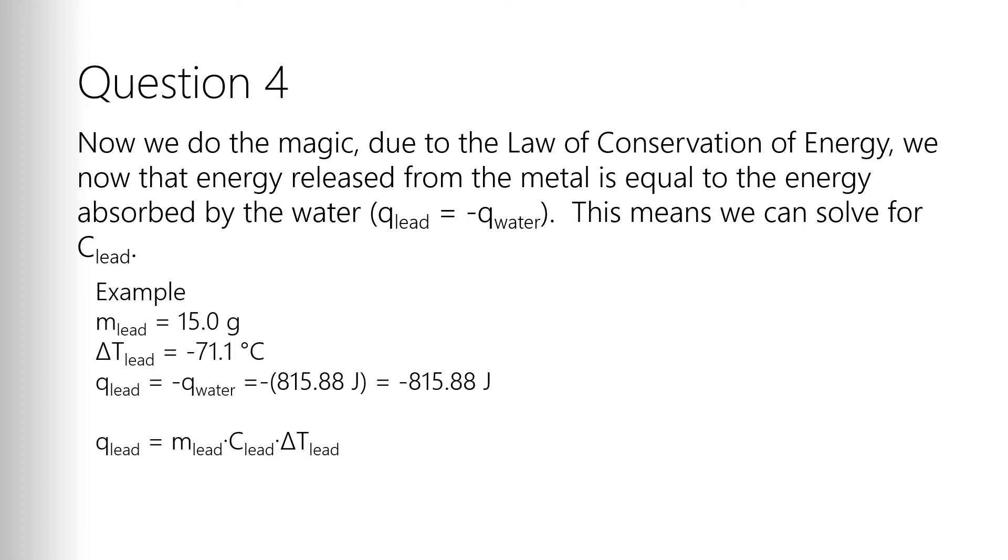So we know the mass, we know the delta T, and we now know the Q, because we take the Q we got for water and we change the sign. So instead of 815.88 joules, it becomes minus 815.88 joules. We're back to our original equation, Q equals MC delta T. But I'm not solving for Q anymore. I'm solving for C. So I have to rearrange the equation. So C is going to be equal to Q divided by M delta T.